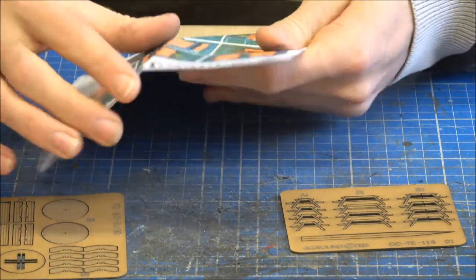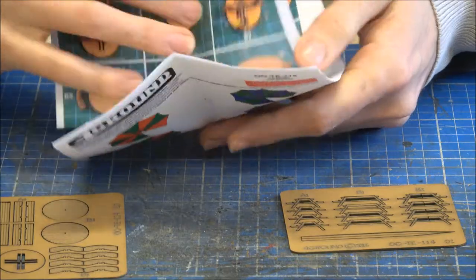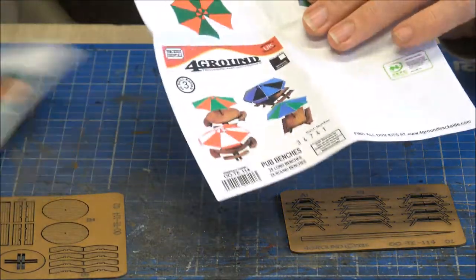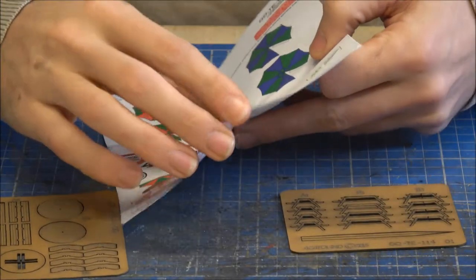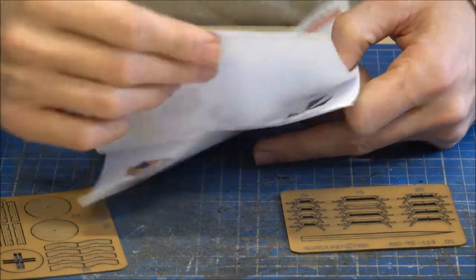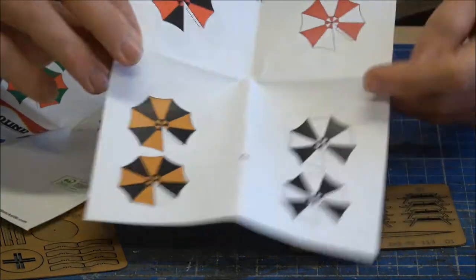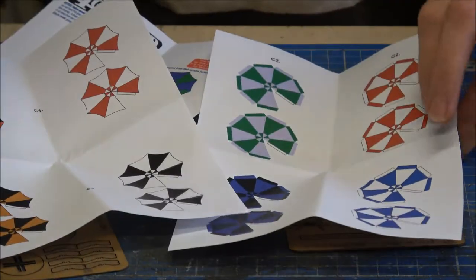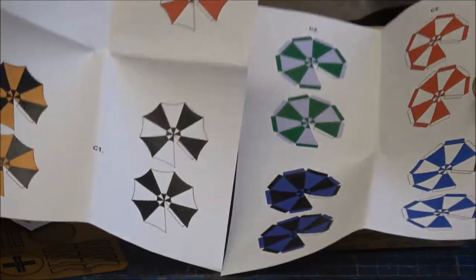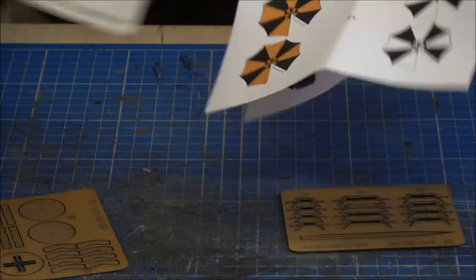And there should also be included in here, as you can hopefully see there, a number of different umbrella tops to put on. So you just cut these out at the appropriate time and just pick which ones you want to use. You've got quite a good selection of different ones that you can use in the kit.